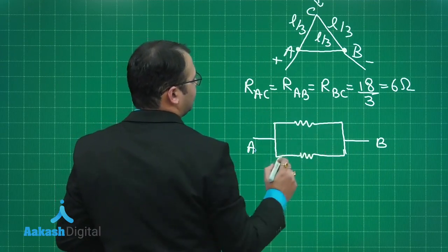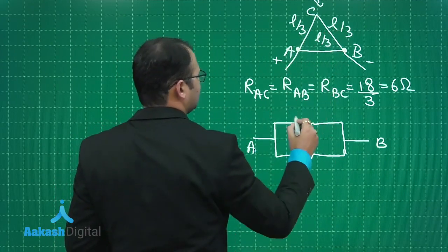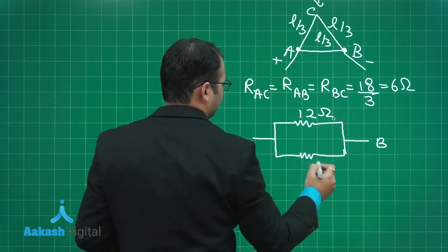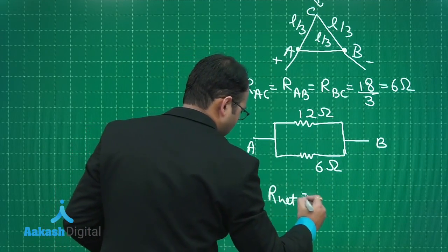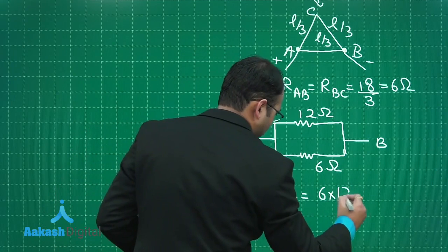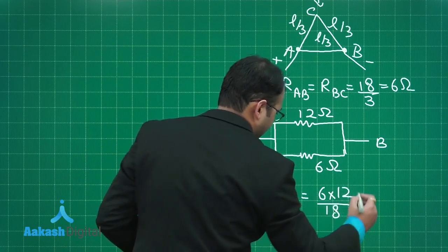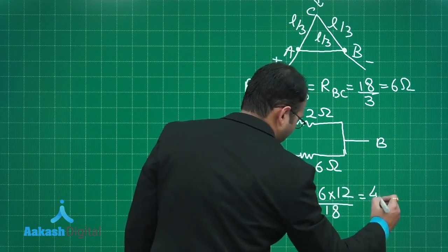From this side there were two resistances 6 and 6 in series, it becomes 12 ohm and this one remains as 6 ohm. So our net would be equals to 6 into 12 by 18. That would be 4 ohm.